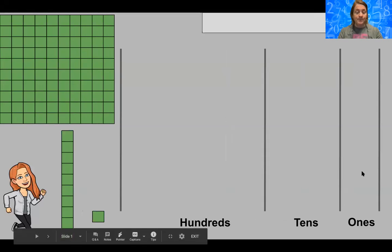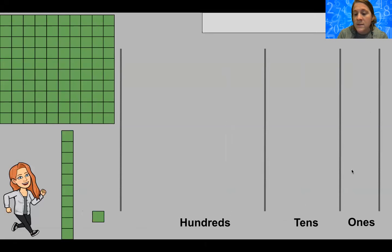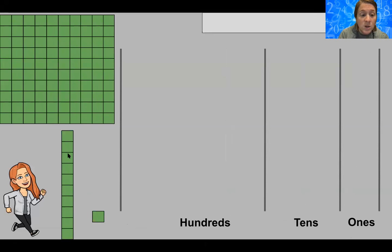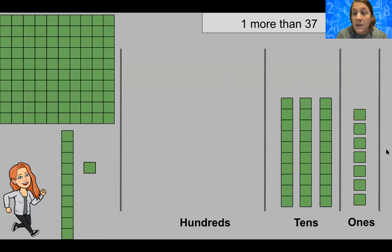Remember we have our place value — we have our ones, we have our tens, and we have our hundreds column. We have our units over here which are our ones, we have our rods over here which are tens, and then we have our flats over here which are our hundreds. That's a little review and now we're going to go ahead and work on some of our problems.